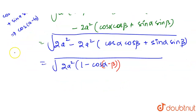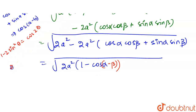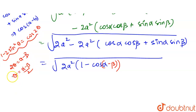We know that 1 - 2·sin²θ = cos 2θ. Here we have cos(α - β), so 2θ = α - β, meaning θ = (α - β)/2. Using this identity, cos(α - β) = 1 - 2·sin²((α - β)/2).